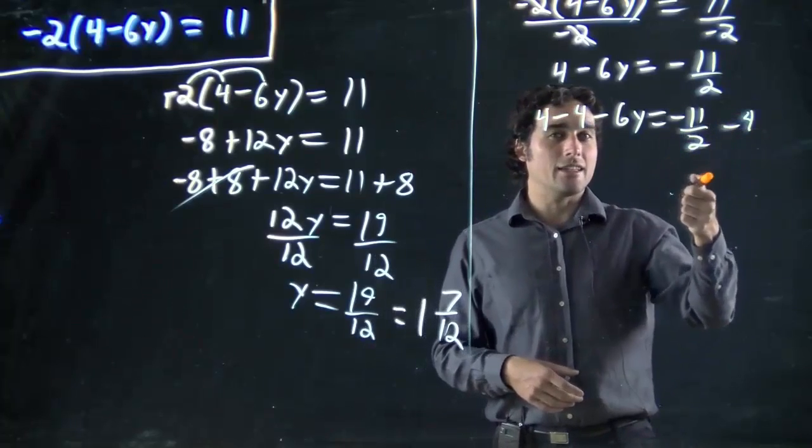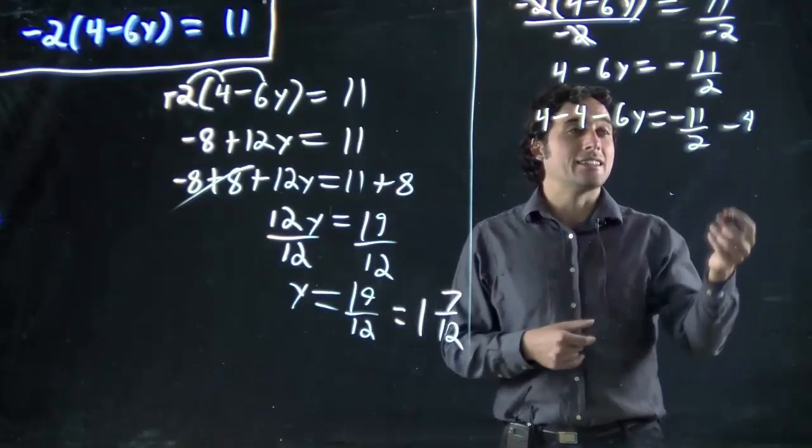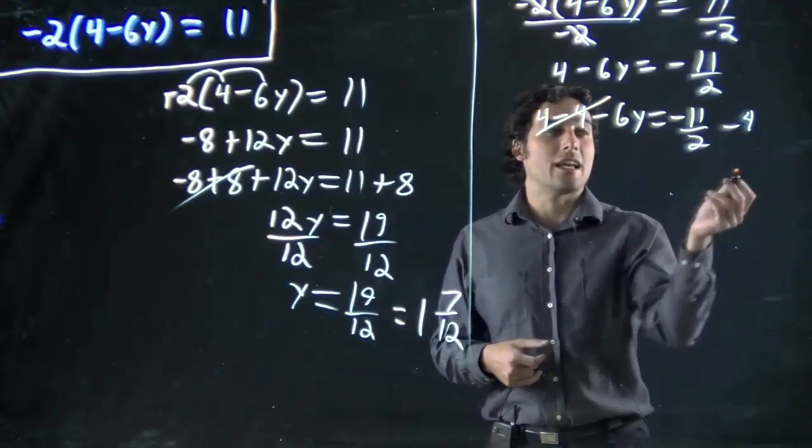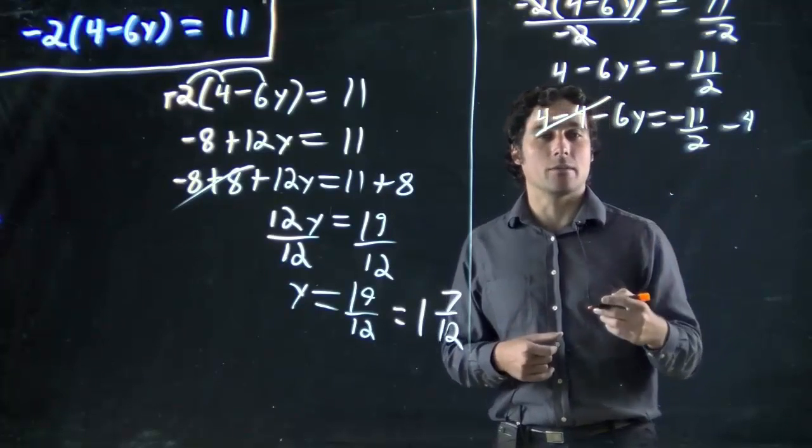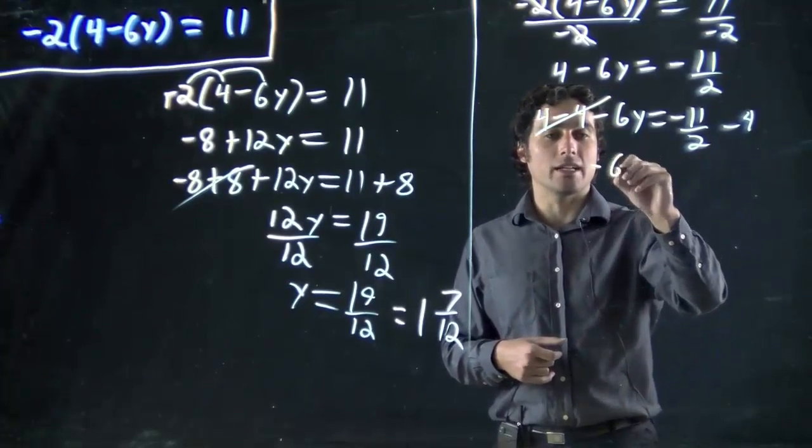And if we want to add these, or if we want to combine these, they have to have the same root on the bottom. The same number on the bottom. So, we still have minus 6y on this side.